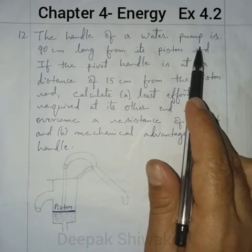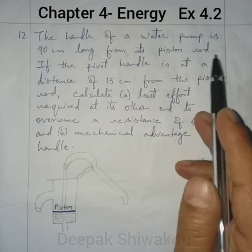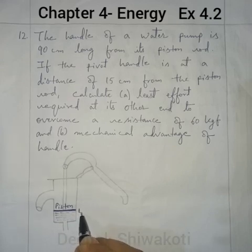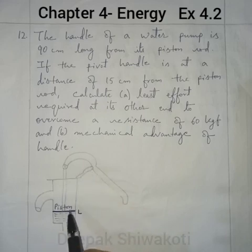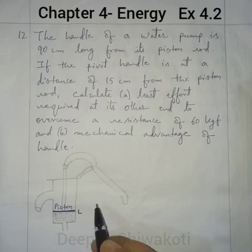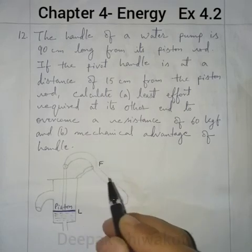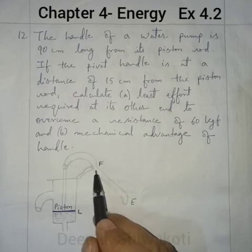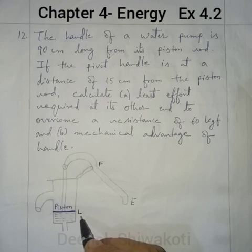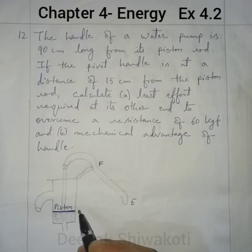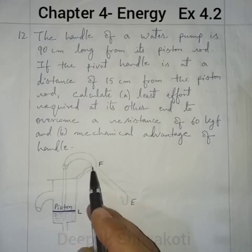The handle of a water pump is 90 cm long from its piston rod. Here you can see this is a water pump. The piston is located here, which is the load of the water pump. From here to here it is 90 cm. This is the fulcrum of the water pump. Effort point is here, fulcrum is here, and load is here. The pivot handle is at a distance of 15 cm from the piston — that means 15 cm from here to here.